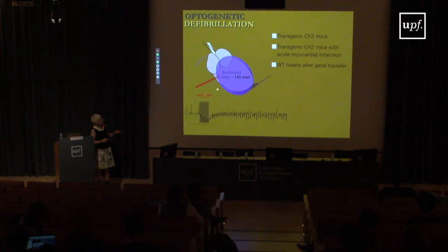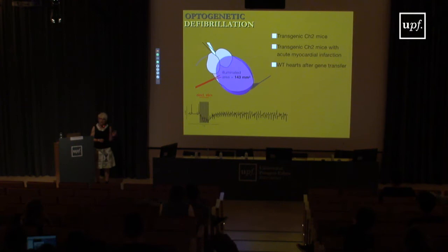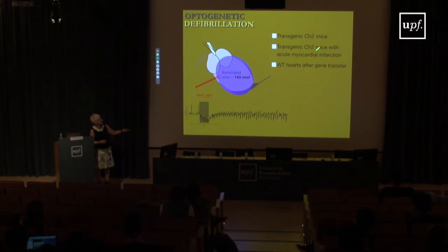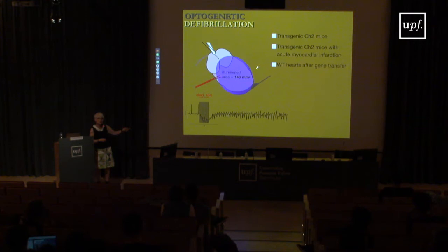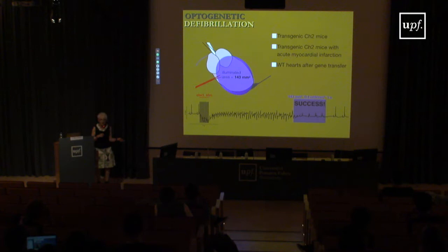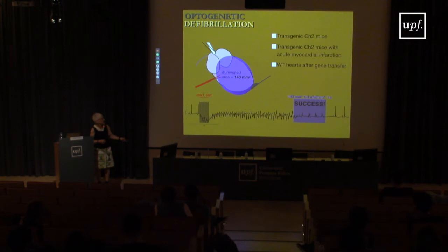The Bonn group initiated arrhythmia in mouse hearts. In the first set of experiments they used transgenic mice expressing channelrhodopsin — including infarcted mice with structural remodeling — and illuminated the heart with blue light, since channelrhodopsin is sensitive to blue light. They demonstrated for the first time that arrhythmia termination, or optical defibrillation, is possible with light. They repeated this with wild-type hearts after viral gene transfer and it was also successful.